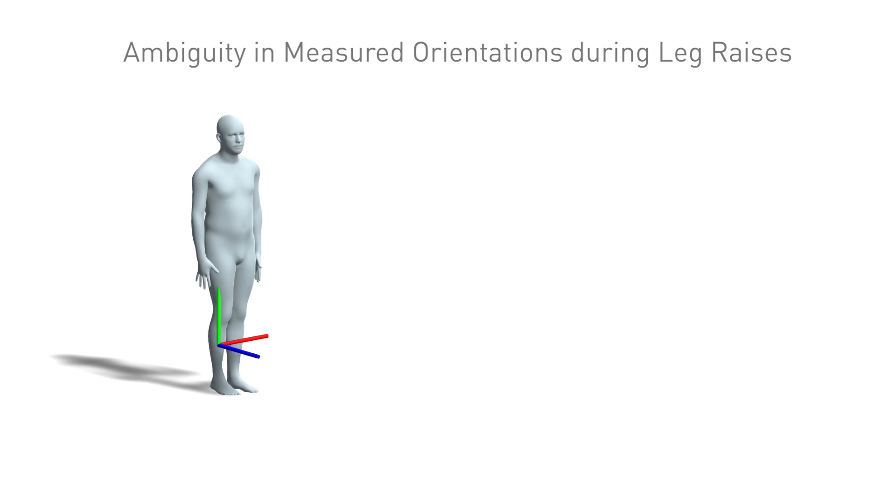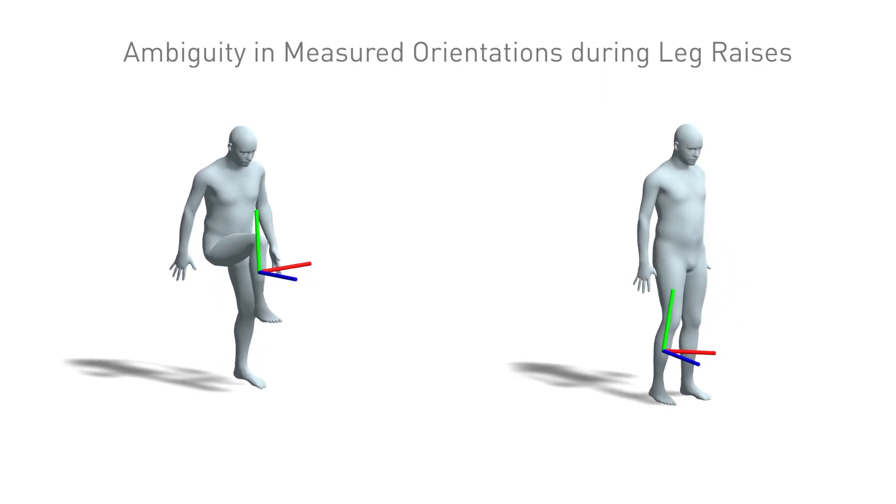Mapping from sparse IMU signals to pose parameters is a difficult and severely under-constrained problem. To illustrate this, consider a series of leg raises. In this example, many orientations of the upper leg can result in the same IMU measurements on the lower leg.